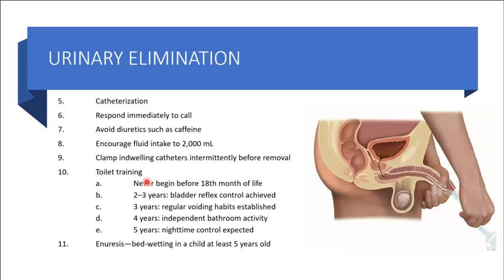Regarding toilet training in children: don't begin toilet training before 18 months of life. Children between two to three years should have achieved bladder reflex control. At three years, regular voiding habits should be established. At four years, independent ability to use the bathroom is expected. At five years, nighttime control is expected.